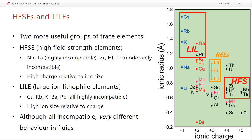All of these have small sizes and very high charge. The large ion lithophile elements are caesium, rubidium, potassium, barium, and lead. Some people would include strontium in with those. These are all highly incompatible until quite late stages of crystallization. Potassium eventually becomes compatible in alkali feldspar, but that's only in basically granitic compositions. Barium is also compatible in alkali feldspar.